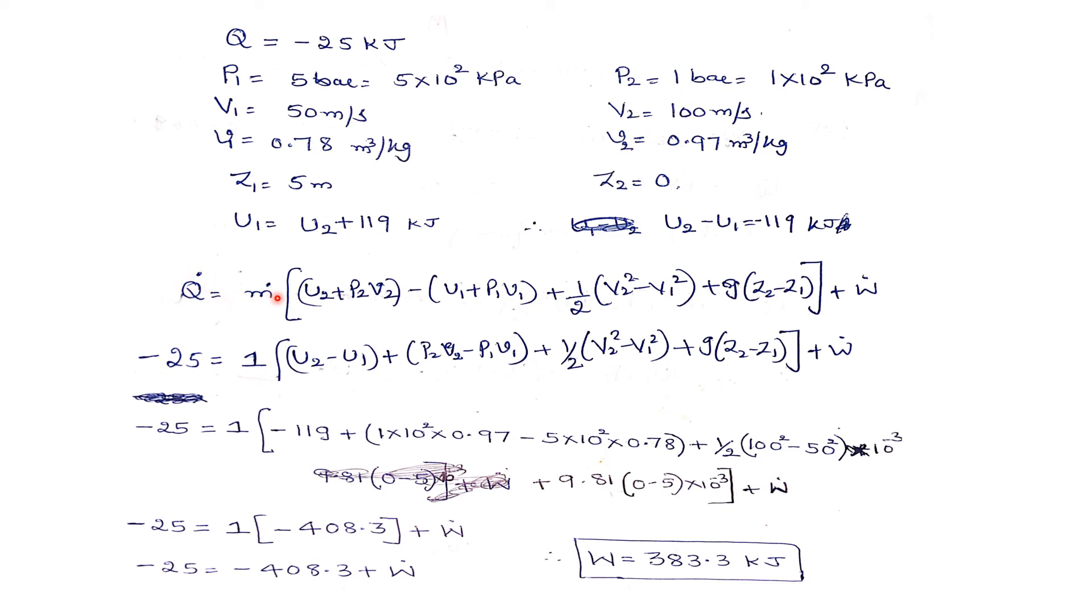Q dot equals M dot times (U2 plus P2V2 minus U1 plus P1V1). This is the steady flow energy equation. Let us substitute all the values. Minus 25 for a kg of fluid, M equals 1. U2 minus U1 is minus 119 from this equation. P2V2 minus P1V1 is substituted, plus 1/2(V2² minus V1²) times 10⁻³.